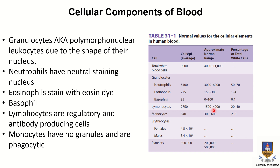We also have lymphocytes, which produce antibodies. Erythrocytes, also called red blood cells, differ in distribution between males and females. This is because males contain a higher proportion of testosterone, which is a hormone that stimulates the production of red blood cells.